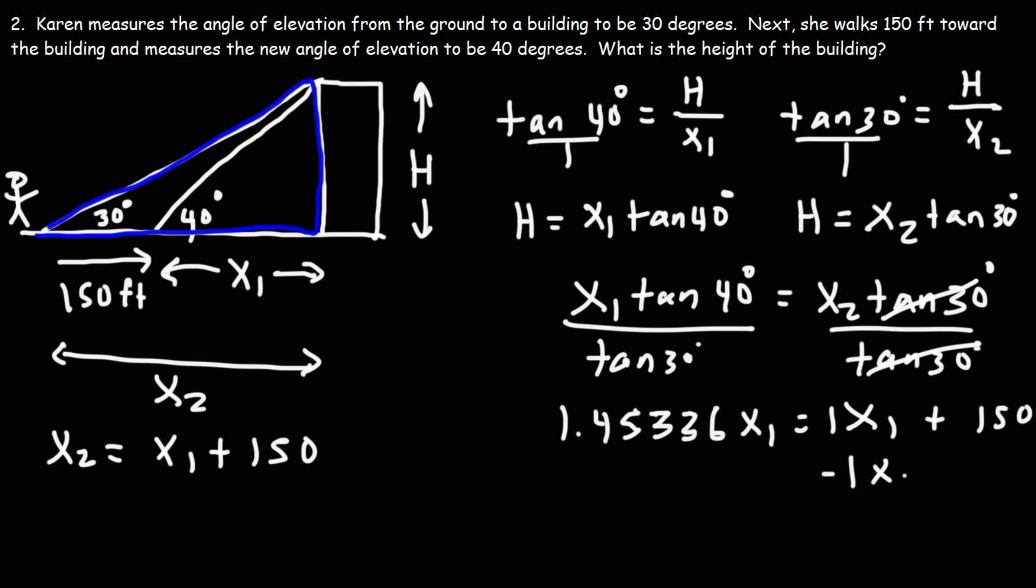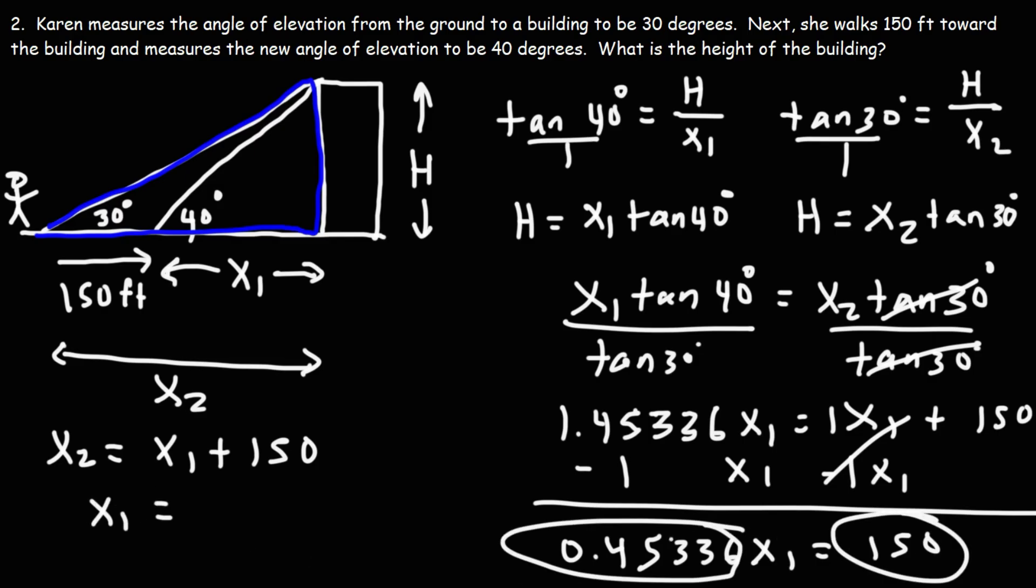I'm going to subtract both sides by 1 x1. So 1.4536 minus 1, that's going to be 0.45336 x1, and that's equal to 150. So to get x1, we need to divide 150 by this number. So 150 divided by 0.45336, that is 330.86.